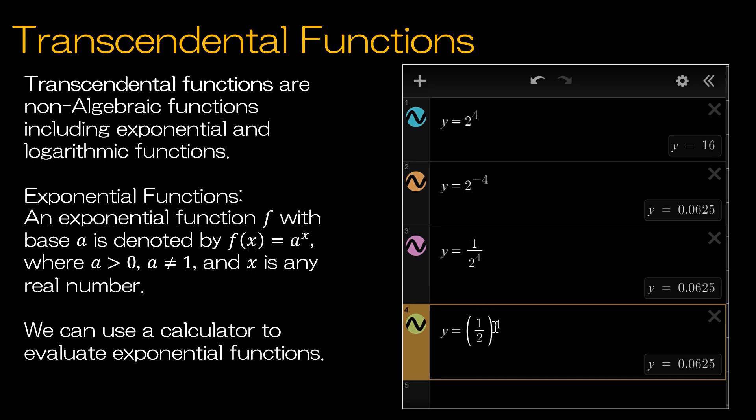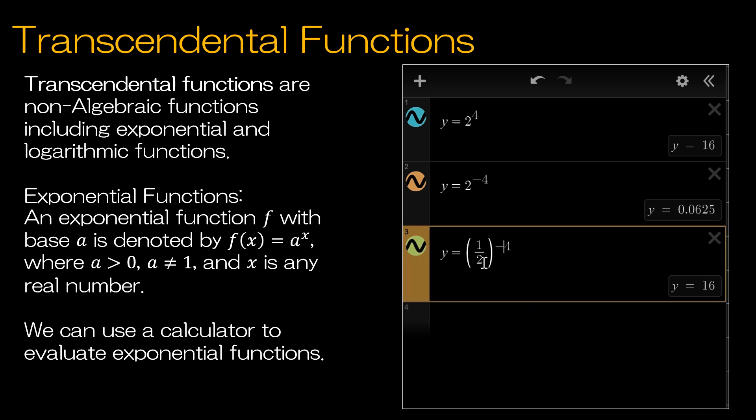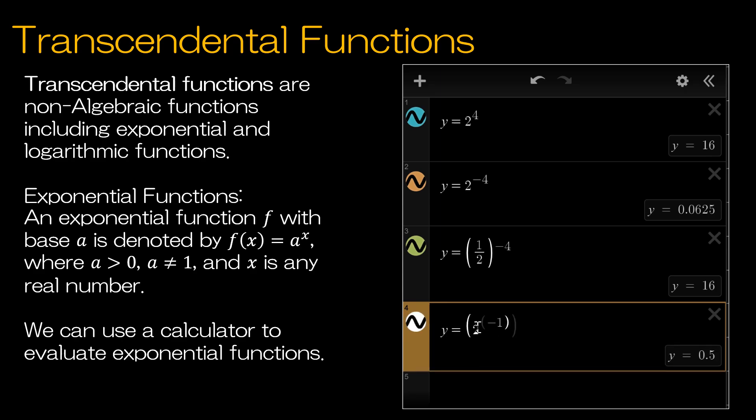Now if I took this to the negative fourth power, what do you think would happen? Well now I'm back up here to two to the fourth. Why is that? Because one half is the same as two to the negative one. And then if I take that to the fourth power, then I end up with the same value of 0.0625 or one sixteenth.